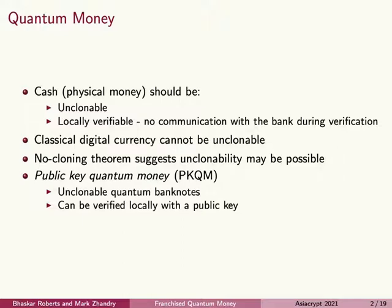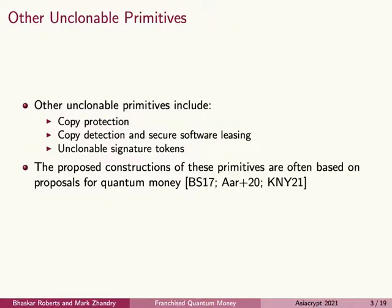However, the no-cloning theorem of quantum physics suggests that we might be able to satisfy these properties using quantum states. Beyond quantum money, there are other unclonable cryptographic primitives that we're interested in. For example, copy protection takes a function and makes it unclonable — it produces a quantum state that you can use to compute the function, but it's hard to create two states that will both compute the function correctly.